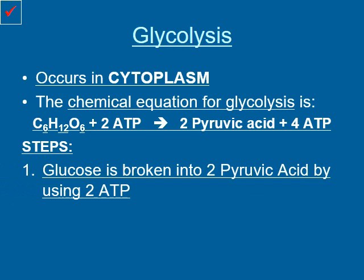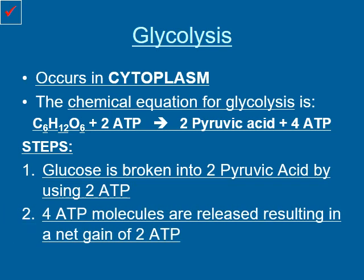So, the steps. Step 1: glucose is broken into 2 pyruvic acid using 2 ATP. We put 2 ATP in to break apart the glucose and make 2 molecules of pyruvic acid. Now, 4 ATP molecules are released from this process, giving us a net gain of 2 ATP. Because we went ahead and put 2 ATP in to begin with — so we were negative 2 — and we just got 4 ATP out of the deal, that gives us a positive 2, so a net gain of 2 ATP. By the time glycolysis is over, we have 2 molecules of pyruvic acid and a net gain of 2 ATP.